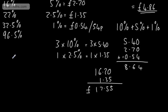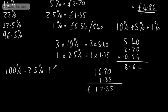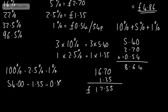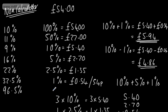For 96.5%, we have lots of choices. I could do 100% minus 2.5% minus 1%: £54 minus £1.35 minus £0.54. You can see how we can build these up for non-calculator questions.